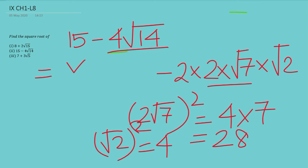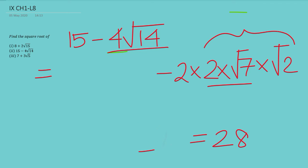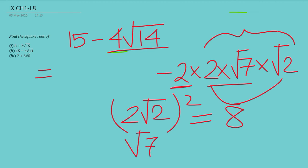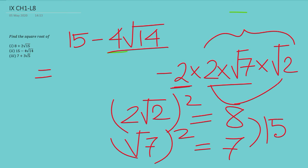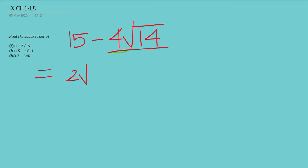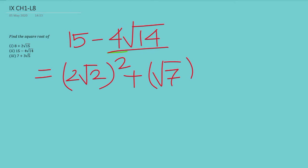So we need to choose numbers from here that give us 15. If we take 2 root 2, then (2 root 2)² = 8, and (root 7)² = 7, and 8 + 7 = 15. Hence we are going to take 2 root 2 as one number and root 7 as the other. So we can write 15 as (2 root 2)² + (root 7)².